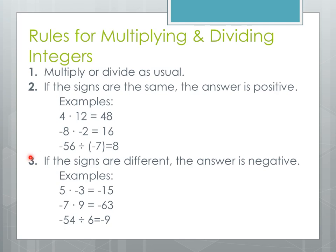Rule three: if the signs are different, the answer is going to be negative. So if we have a positive and a negative, we get a negative. Or a negative and a positive, we get a negative. The same holds for division as well.